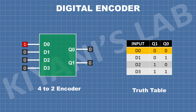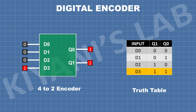Now let's see how a 4-to-2 encoder works. When input D0 is active, both outputs are zero, which represents the binary code of zero. When input D1 is active, output Q0 is activated, which represents binary code of one. When input D2 is active, output Q1 is activated, which represents the binary code of two. When input D3 is active, both outputs are activated, which represents binary code of three.